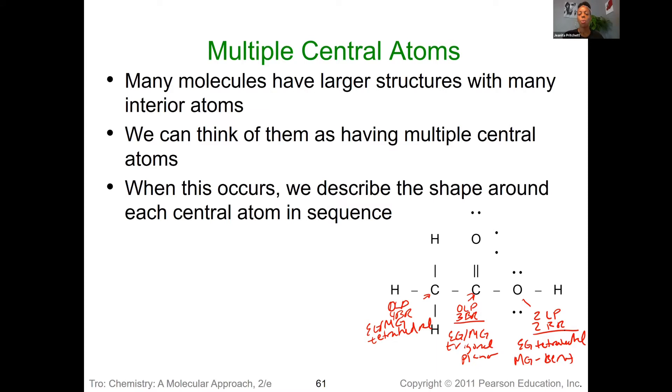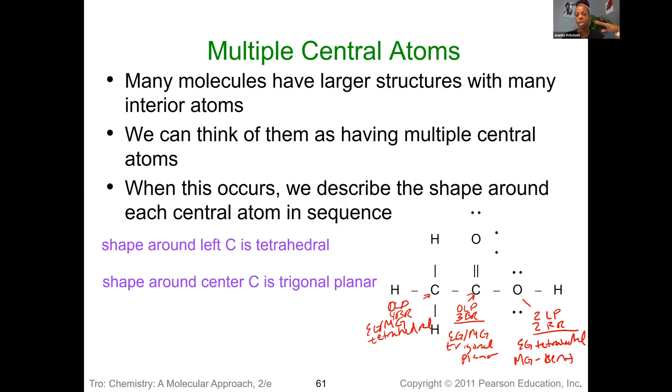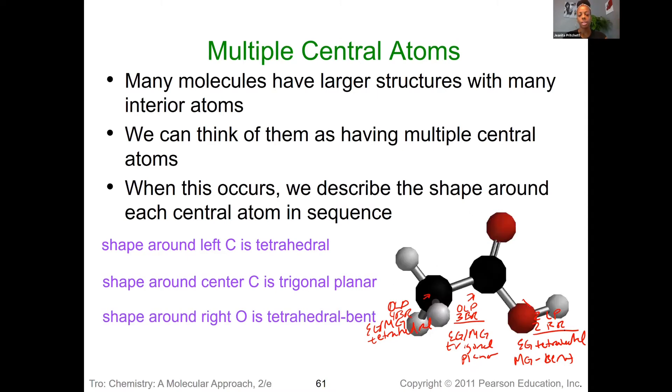And so when we put all that together, you can see that the actual shape is going to end up looking like this versus this flat 2D structure. So the take-home message, when you're dealing with something with multiple central atoms, you treat each portion individually, count the lone pairs, count the bonding regions, and then you can predict both the electron and molecular geometries for each of the atoms.